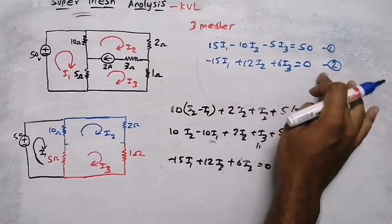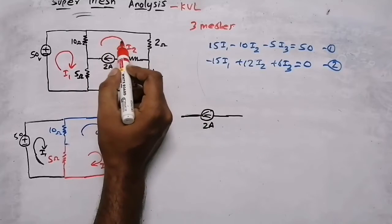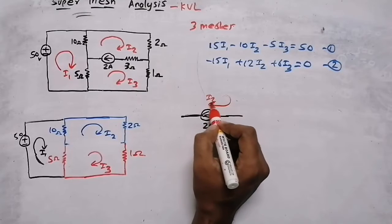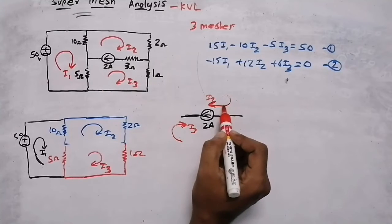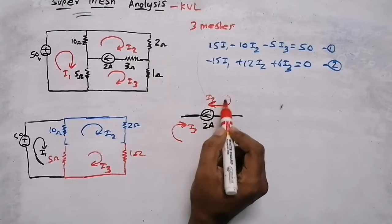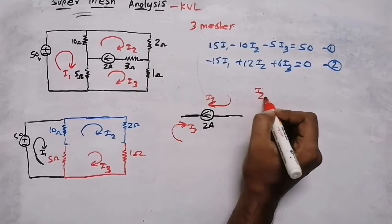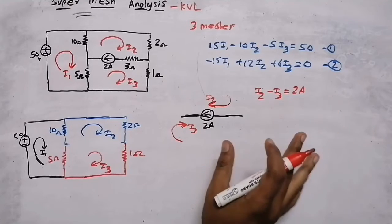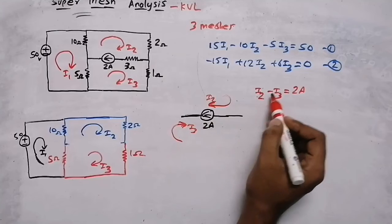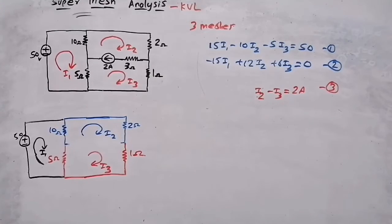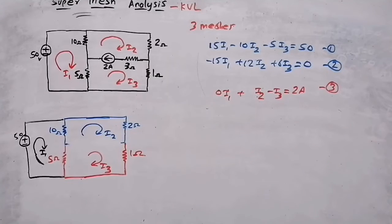We have three meshes so we need three equations, but so far only two. The third equation comes from the 2-ampere current source. Current i2 flows in the same direction as the current source, while i3 flows in the opposite direction. Therefore the constraint equation is: i2 minus i3 equals 2 amperes. Written with all three unknowns: 0·i1 plus i2 minus i3 equals 2.